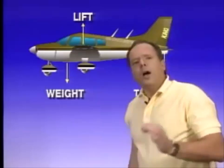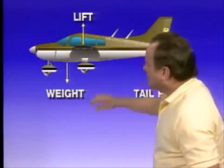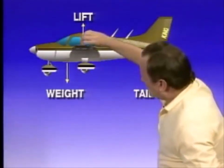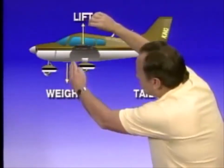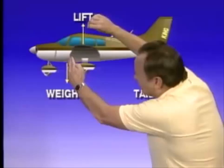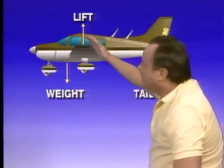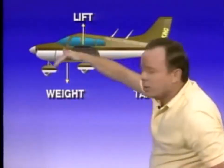Pick this airplane up with a string at the center of pressure. Now notice where the center of gravity is — it's ahead of it. What's going to happen? The airplane is going to nose down.